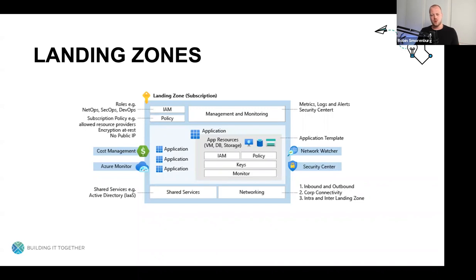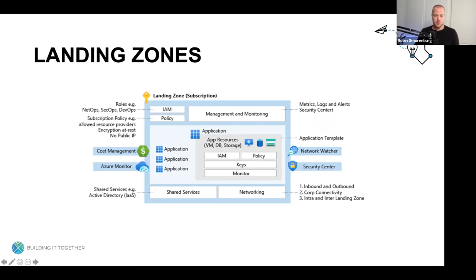That's what you're trying to do when you create a landing zone — anticipating what you need and what is going to land on your Azure platform. How are we going to make sure all these services like network watcher, security center, cost management, monitoring, logging, policies, identity and access management, etc., are available as shared services? For example, you won't have to deploy Active Directory instances for every workload — you can centralize these instances to save costs and simplify management.